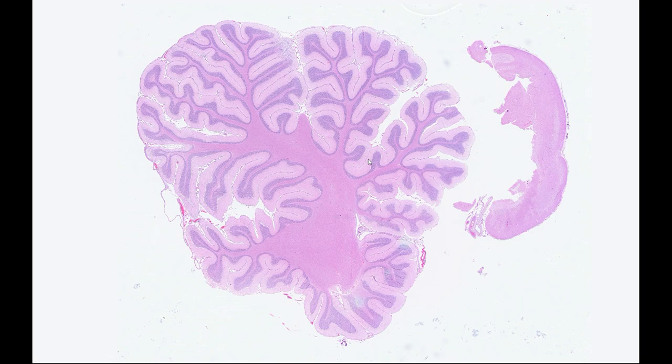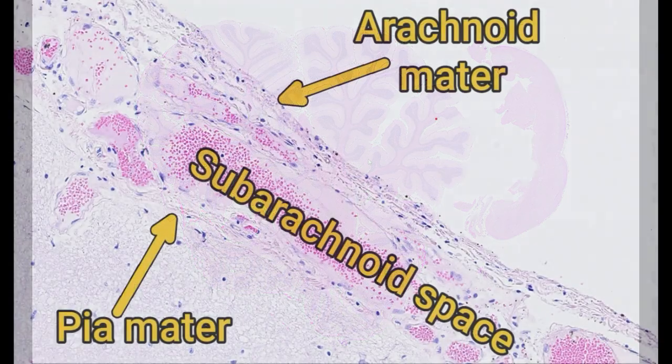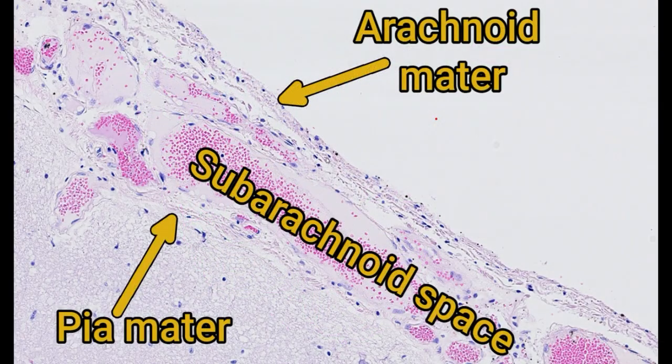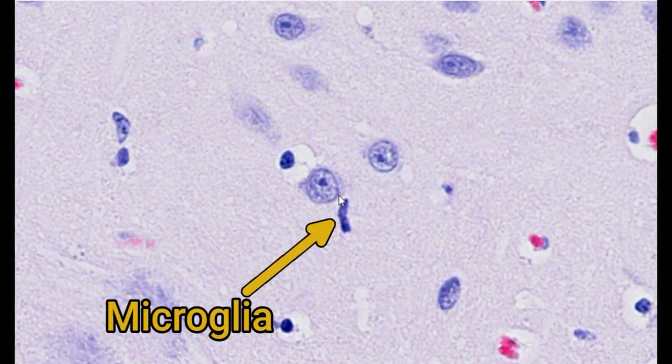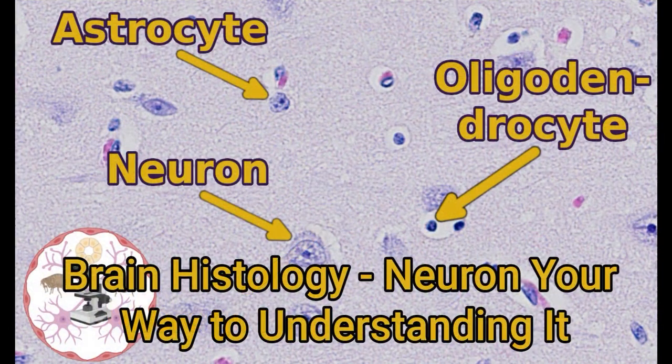Before we start, I thought I'd mention that this video assumes some prior knowledge of neurohistology. If you want an introduction to neurohistology, including anatomy of the meninges and identification of different types of cell in the brain, I recommend checking out the video I uploaded previously, Brain Histology.